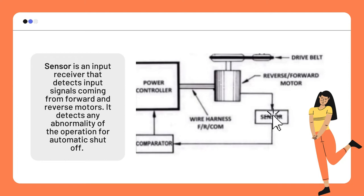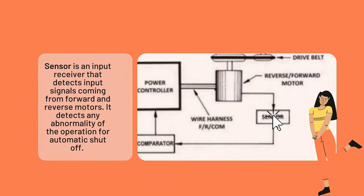Second, the sensor: it is an input receiver that detects input signals coming from forward and reverse motors. It also detects any abnormality of the operation for automatic shutoff.